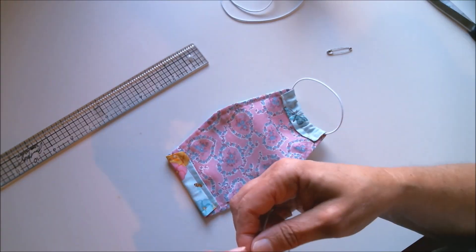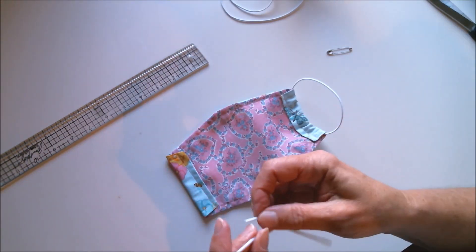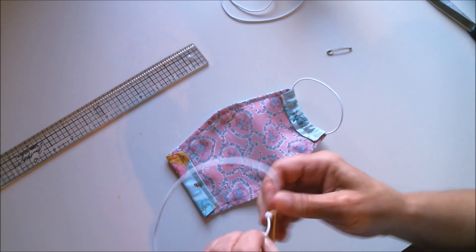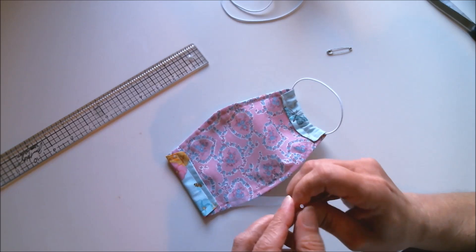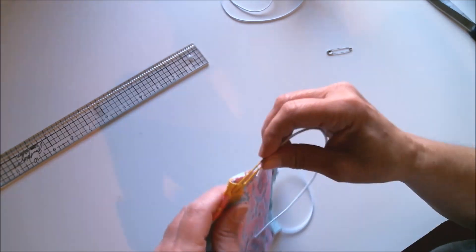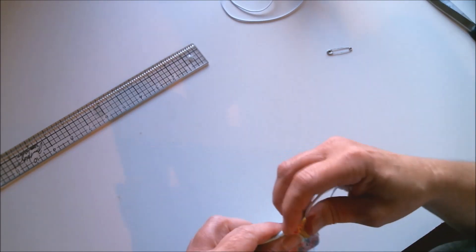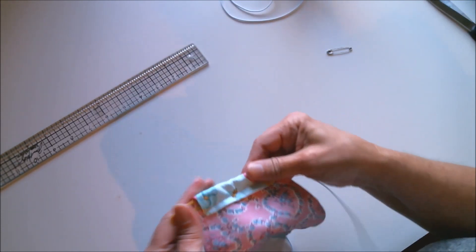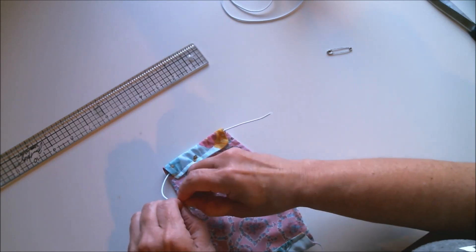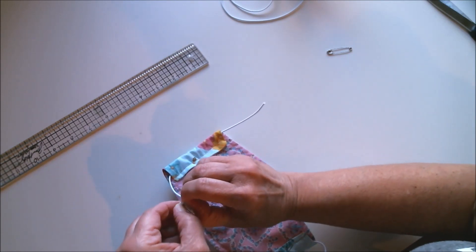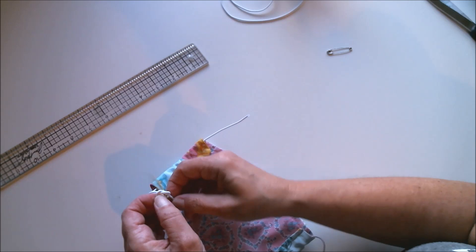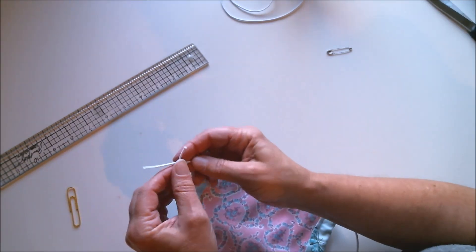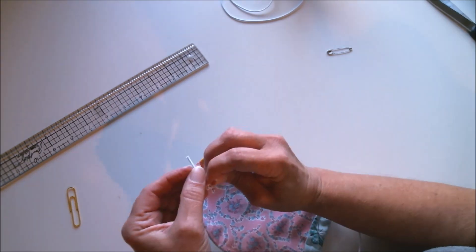Now I'm just going to add the elastic the same way to the other side and we will be done. If you don't have elastic, you can use shoelaces or you can cut a skinny piece of t-shirt material to use in place of the elastic. There are a lot of options that you can use. If you wear glasses or hearing aids, or it's uncomfortable for you to wear these around your ears, I have another video that I've made that I will link below at the top of the description box, and I will probably link it at the end of this video on the screen as well.